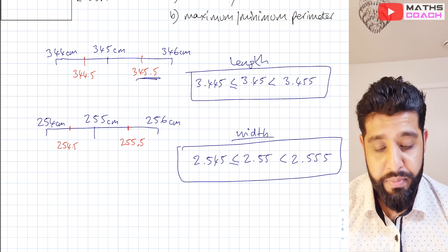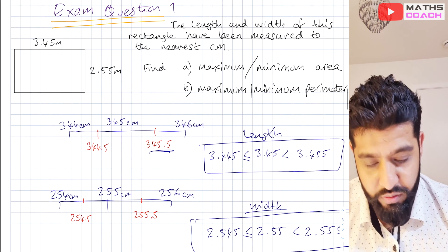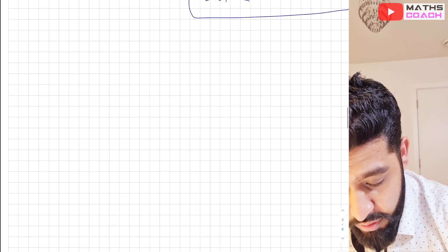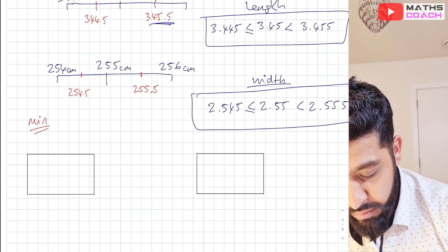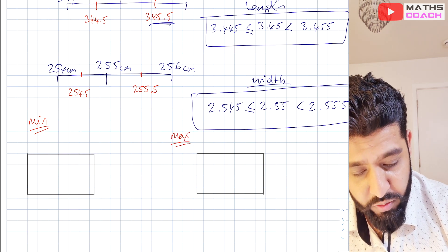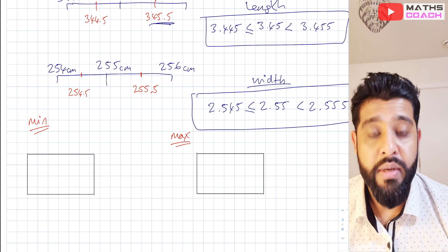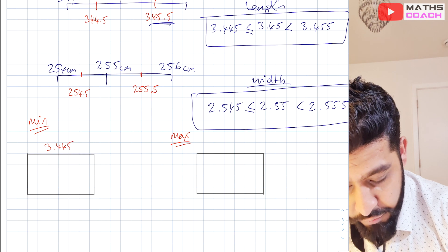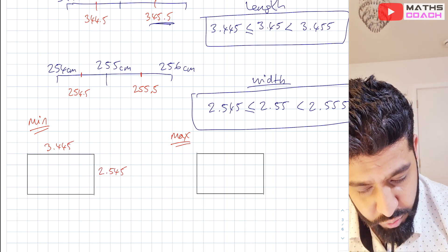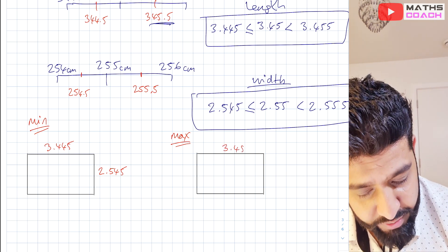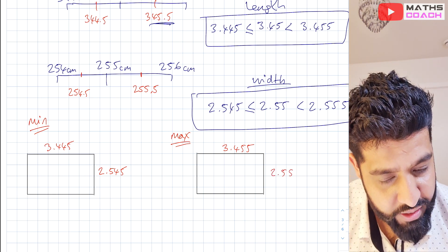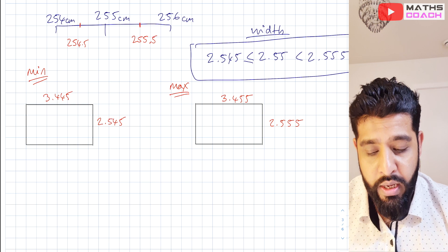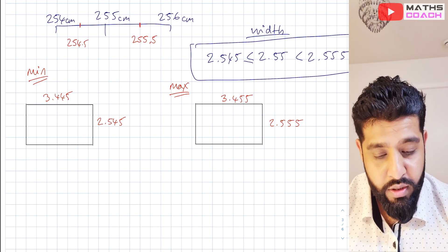What you can do, which does help, is draw these values back into your rectangle — it just helps you keep an eye on what is what. So we have two rectangles: our minimum rectangle and our maximum rectangle. For the minimum rectangle, we have a length of 3.445 and a width of 2.545. For the maximum, we have 3.455 and 2.555. So our rectangle can be either the minimum or the maximum.